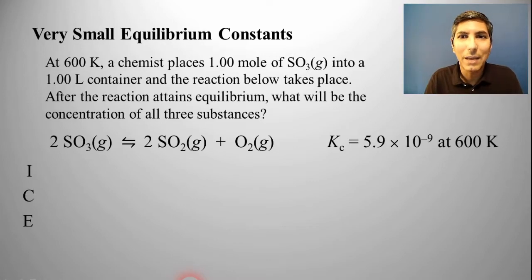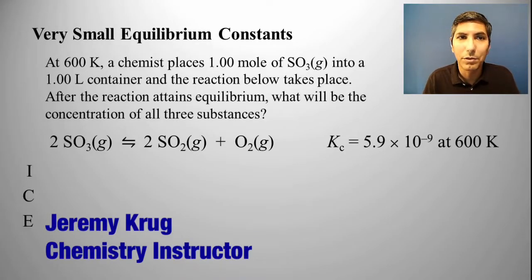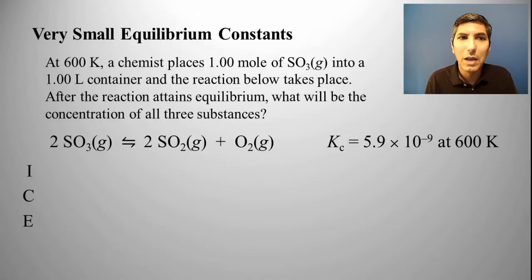Hi there, I'm Jeremy Krug, and in this AP Chemistry video we're going to be taking a look at Unit 7, Section 7, which is about solving equilibrium problems. Specifically, what you can do if you have a very small equilibrium constant.